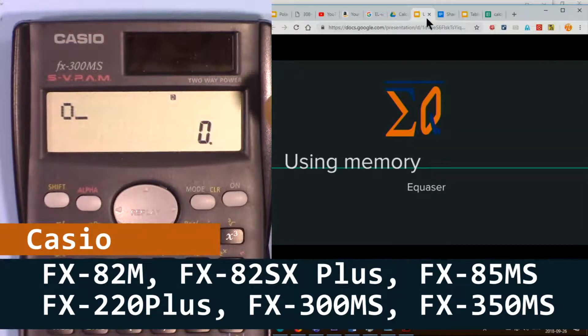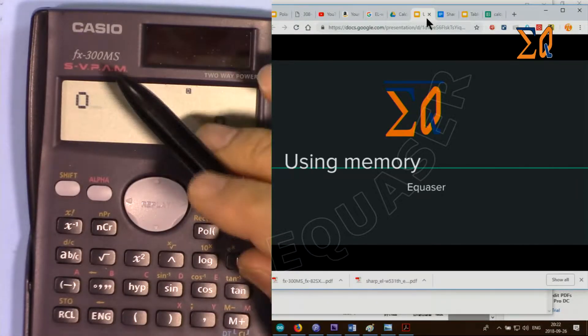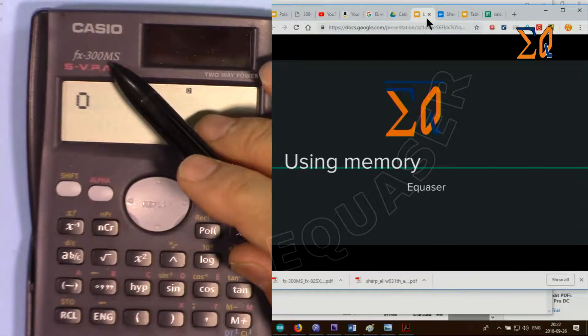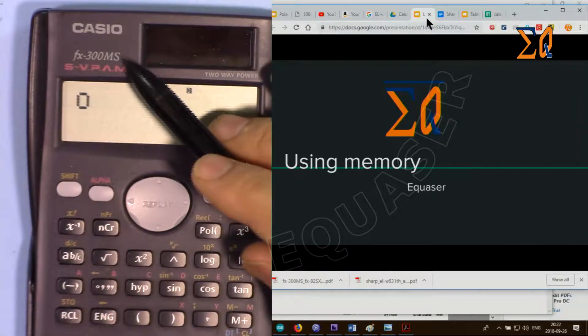Hi, welcome to a calculator tutorial by Aquasar. In this video we are going to see how we can use the memory feature of the Casio FX300MS, Casio FX100, 32MS, and 32SX.